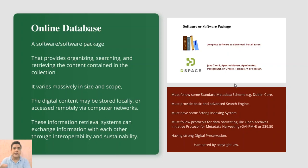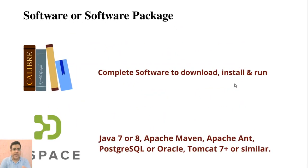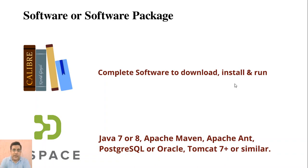The next thing we need to understand is online database. By online database we mean a software or software package. For example, Caliber eBooks Management is a complete software to download, install, and run — there are no other packages or prerequisites required except the operating system. So Caliber eBooks Management is a software — a complete software to download, install, and run.